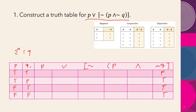Next, we find p to conjunct with the negation of q. We copy p as: T, T, F, F. The conjunction of p and negation of q: both true gives true; true and false gives false; false and true gives false; false and false gives false.